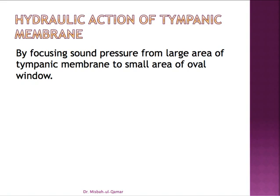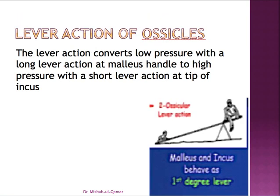The second factor through which impedance matching is achieved is the lever action of the ossicles. The malleus and incus behave as a first-degree lever system because the handle of the malleus is around 1.3 times longer than the long process of the incus. This lever action converts the low pressure with a long lever at the malleus handle into a high pressure with a short lever at the tip of the long process of the incus.